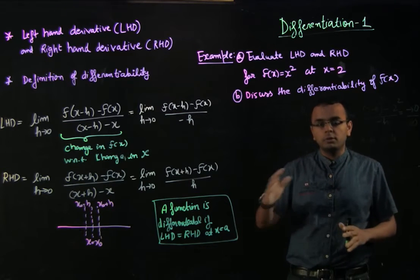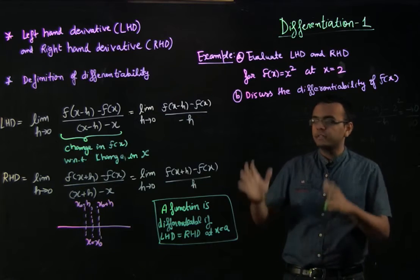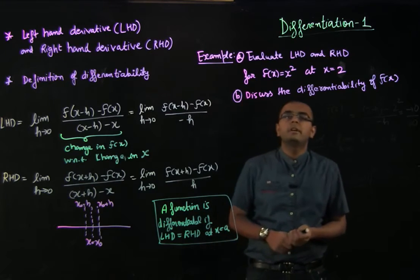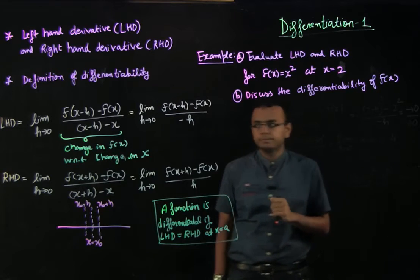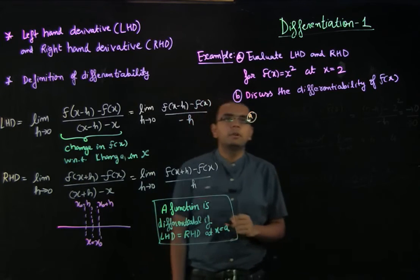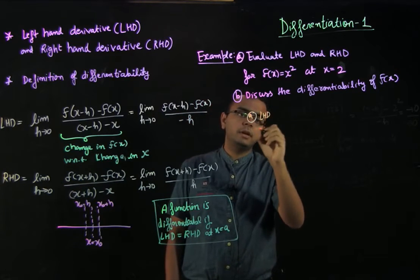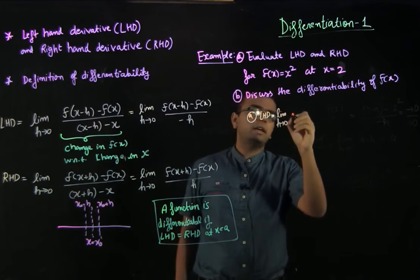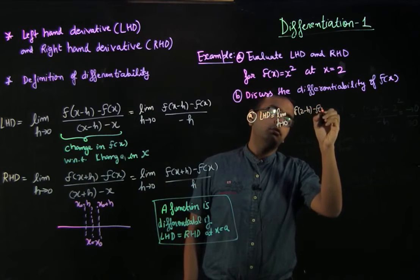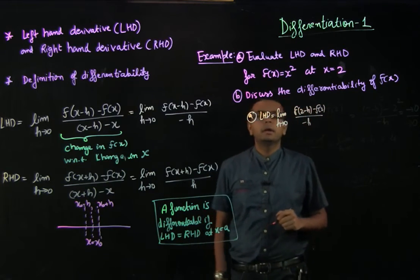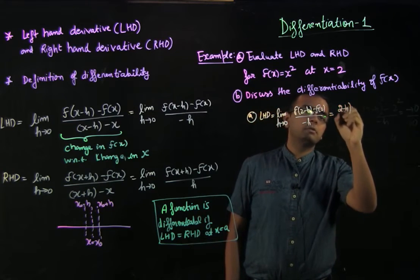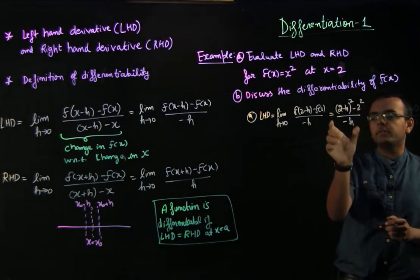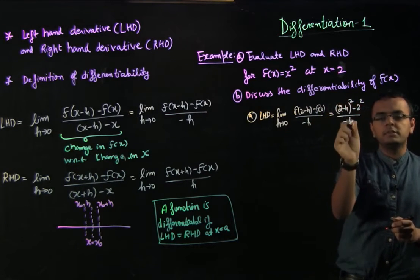I have a simple example here — we will go through more complicated examples relevant to JEE later, but this is a fundamental one. Let us evaluate LHD and RHD for f(x) = x² at x = 2. For LHD, we write: limit h tends to 0 of [f(2 − h) − f(2)] divided by (−h), which is [(2 − h)² − 2²] divided by (−h). If we substitute h = 0 directly, we get 0/0, which is an indeterminate form.